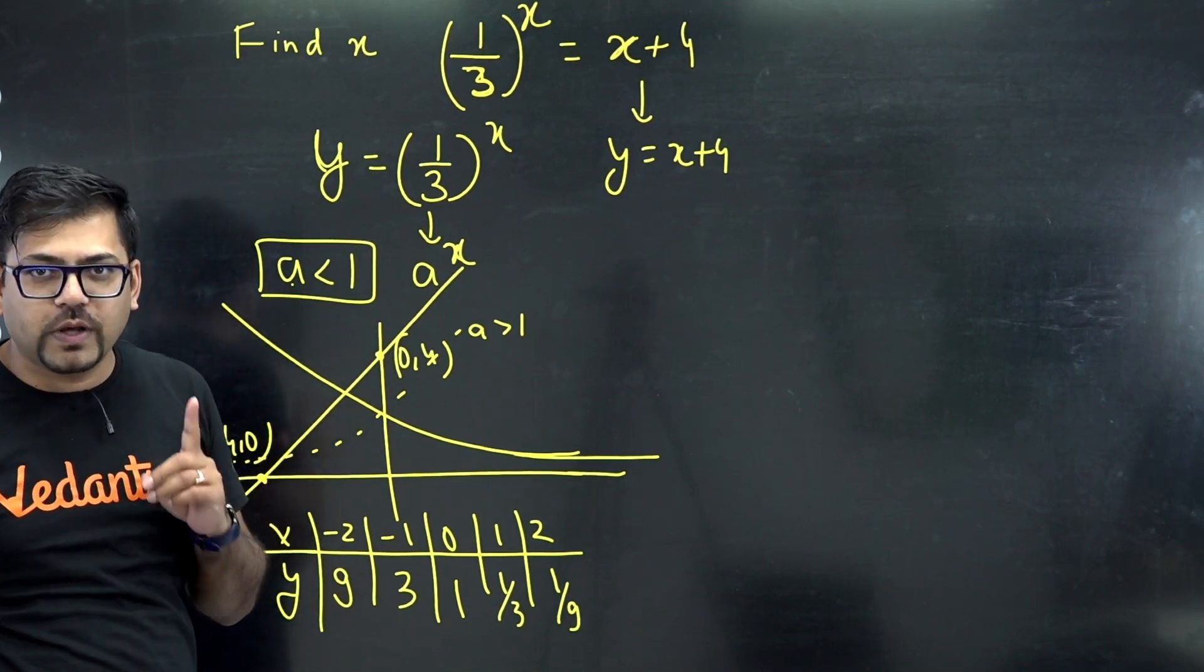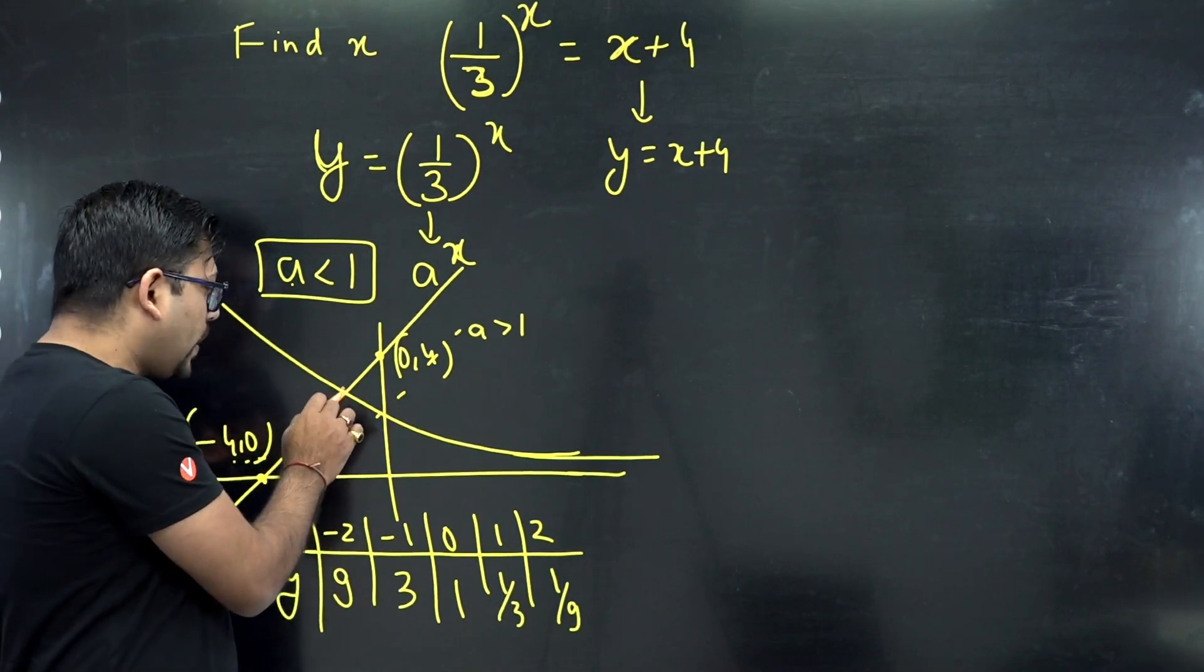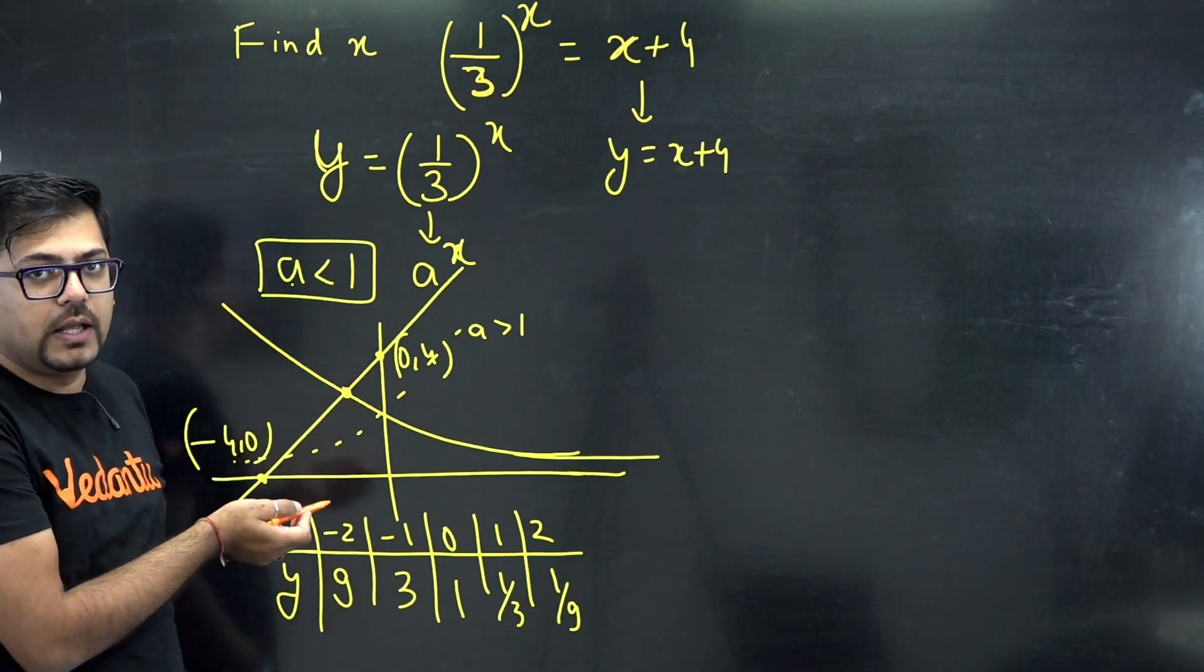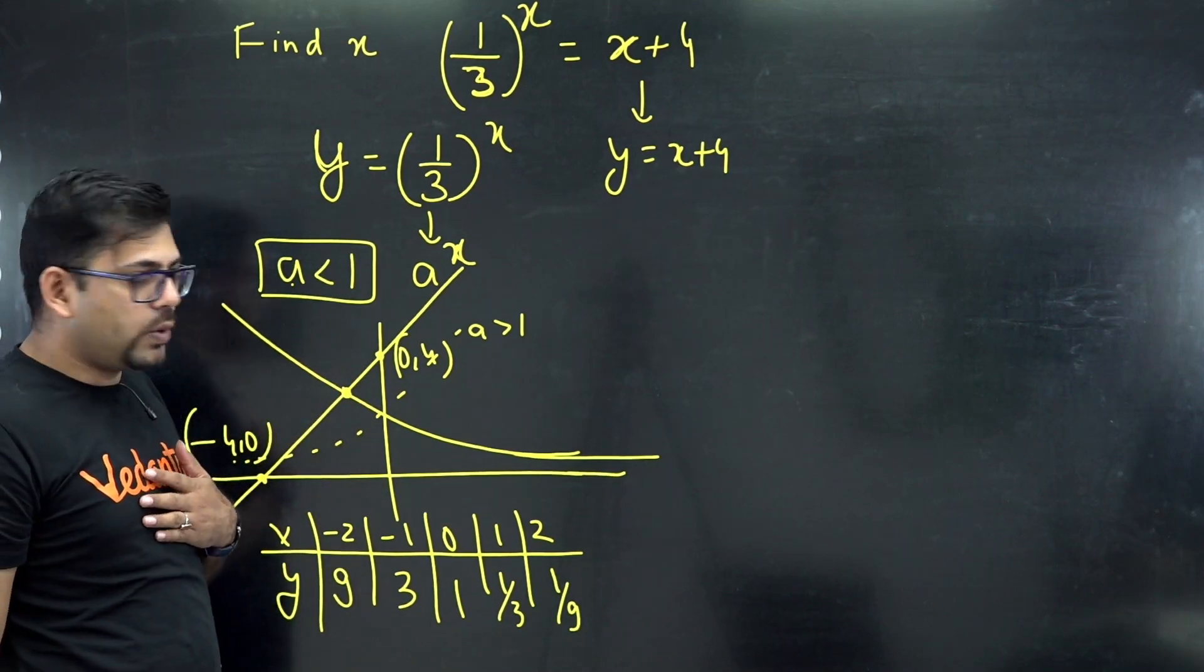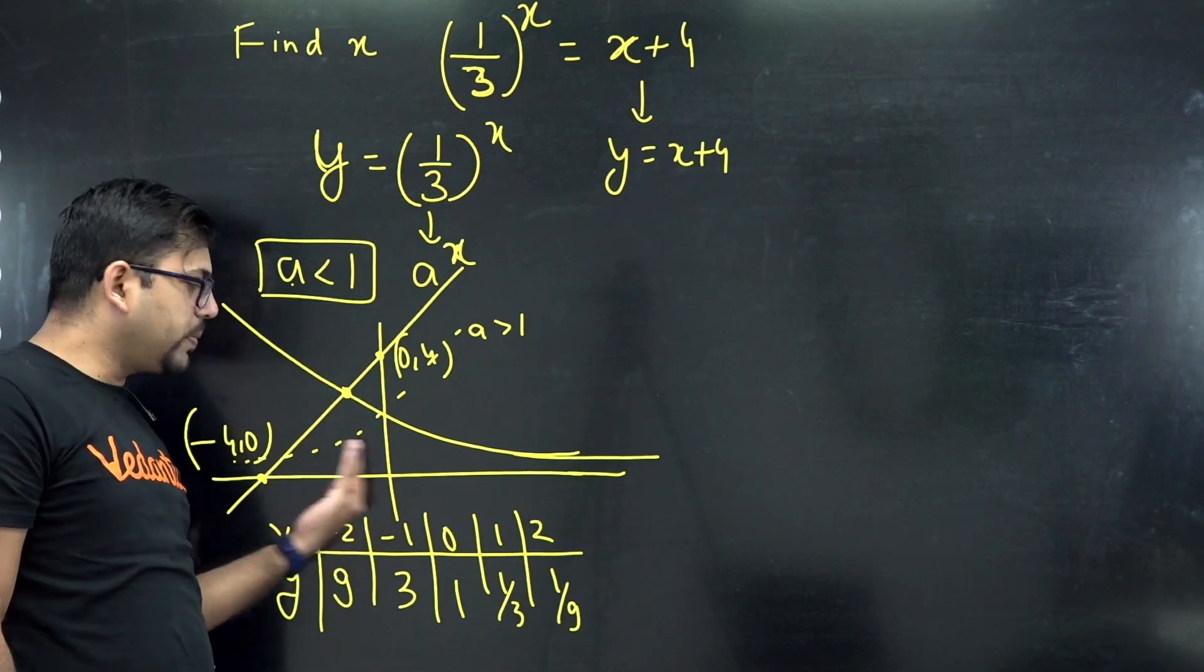Now from this graph, this is very much evident that both the graphs are being intersected at only one and one only one point, and that one point is going to be the answer. And from this graph intersection I'm even able to find out that that value of x is going to be a negative value.